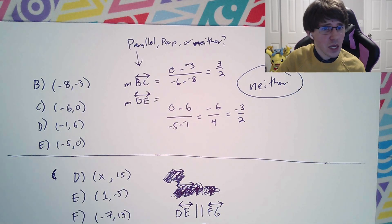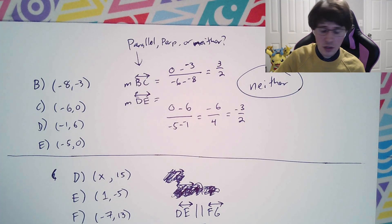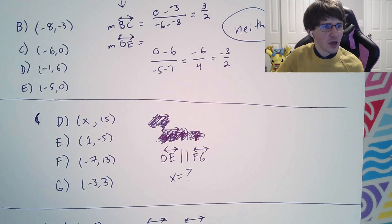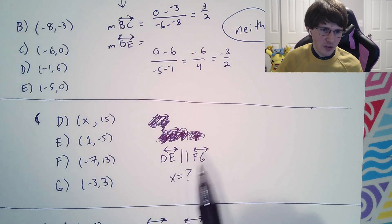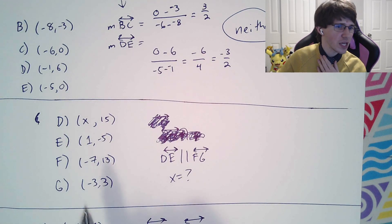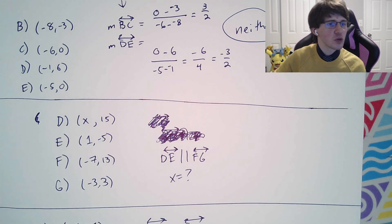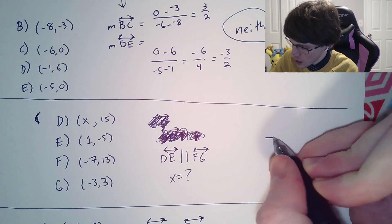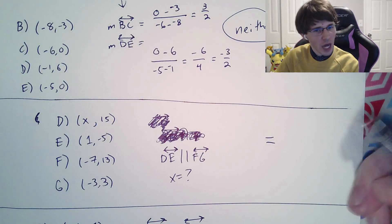The other types of problems that you might experience are questions like this, where you're told in advance that the lines are parallel. So it's not like the previous one we either figured out. You're told they're parallel, but you don't know what x is over here.